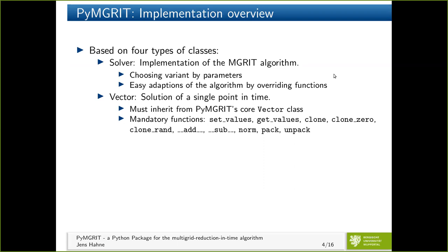The next class type is the vector class, which contains the solution for a single point in time. Each vector class has to inherit from an abstract superclass in the core of PyMGrid, and we have to define some mandatory functions: set_value, get_values, clone, clone_zero, and so on. Most of these functions are really two or three liners, so it's not too much work.